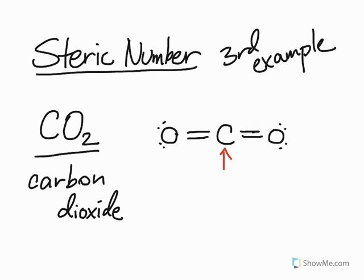The number of bonding areas again is just the number of areas where there's bonds present around that central atom. And since there's two areas where there's bonds, there's one double bond here and one double bond there, this actually only has two bonding areas.